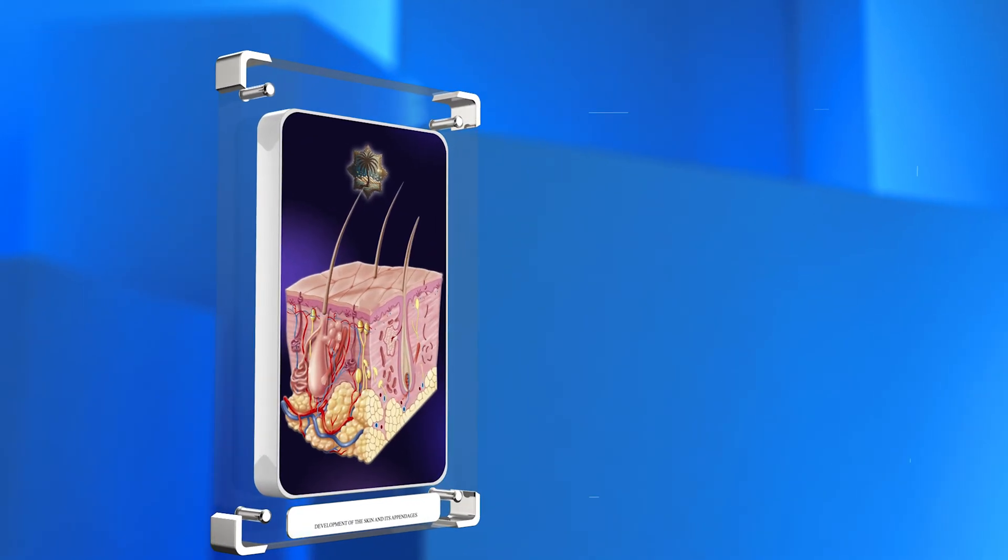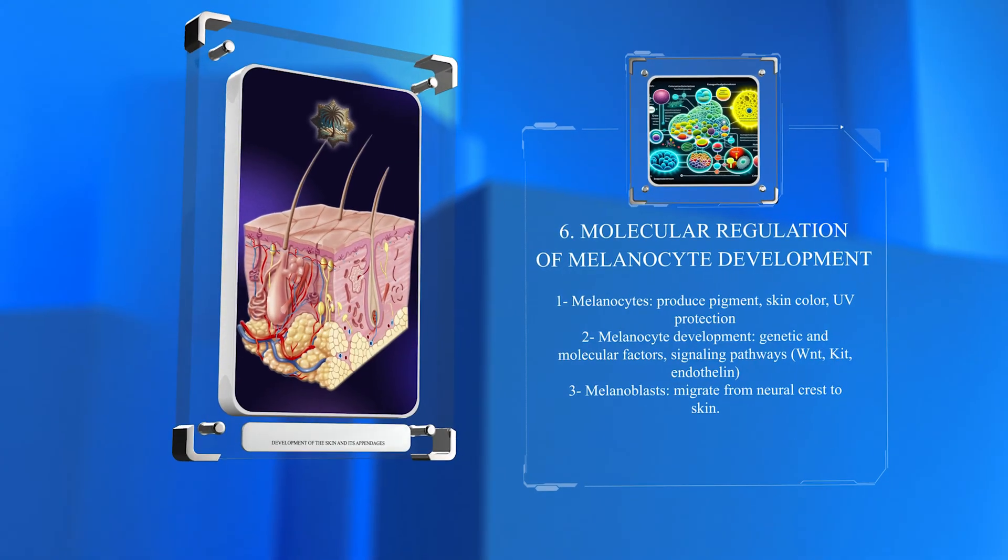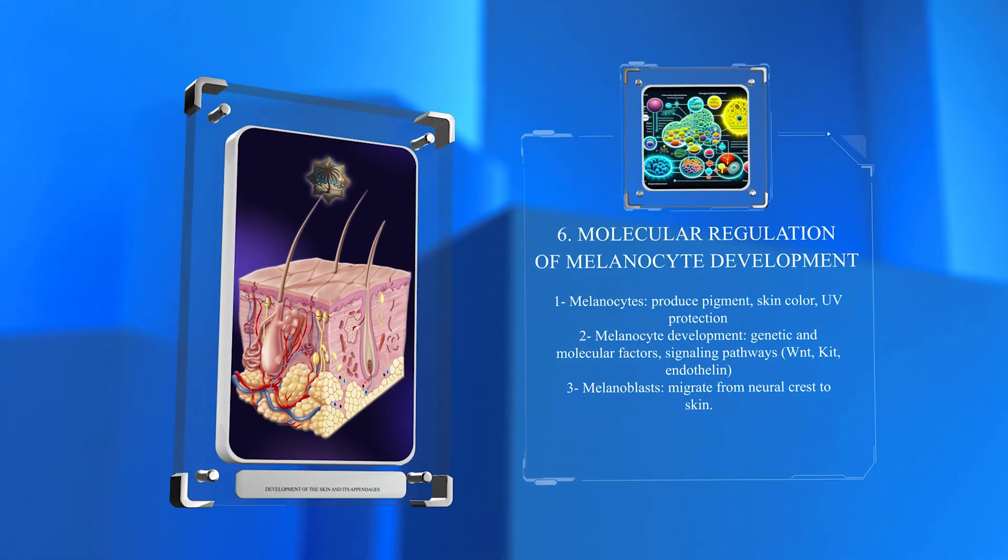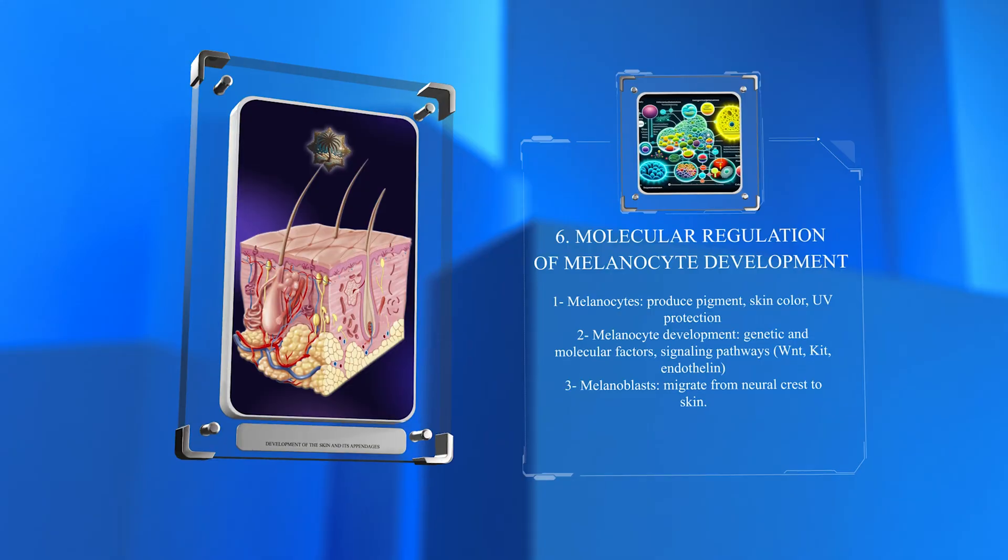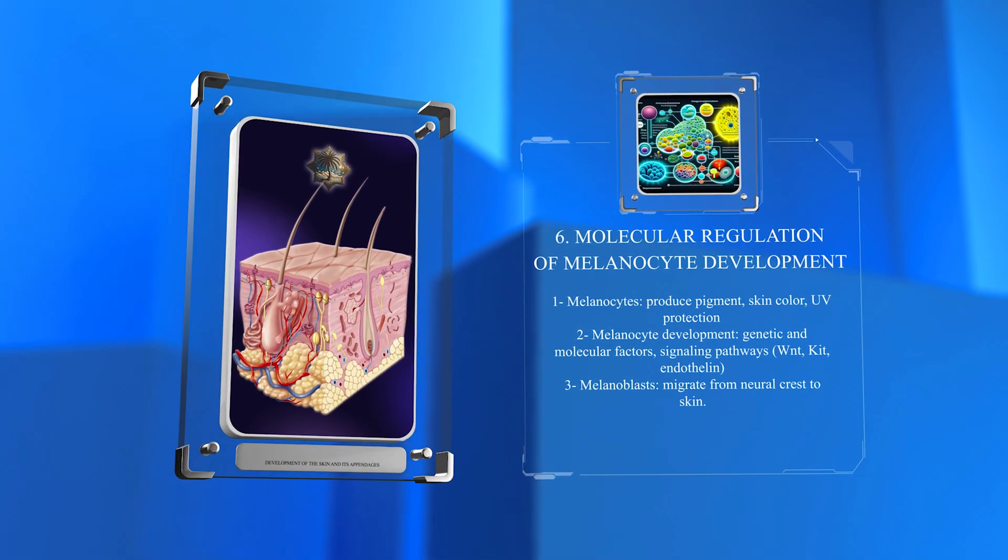Melanocytes are special cells that produce pigment for skin color and UV protection. They develop from melanoblasts, migrating from neural crest to skin. Melanocyte development involves genetic and molecular factors, including signaling pathways like WNT, KIT, and endothelin.